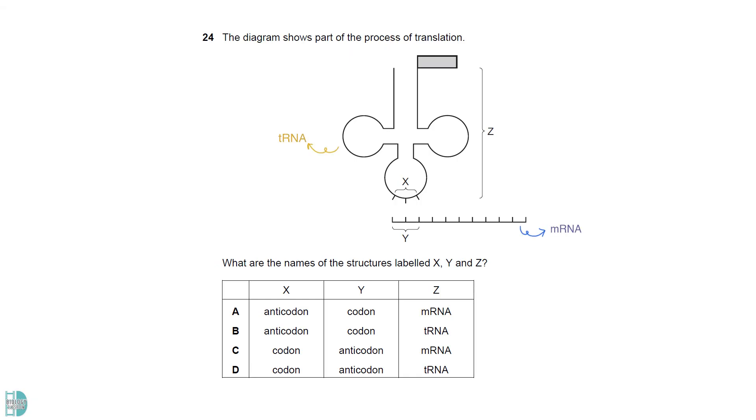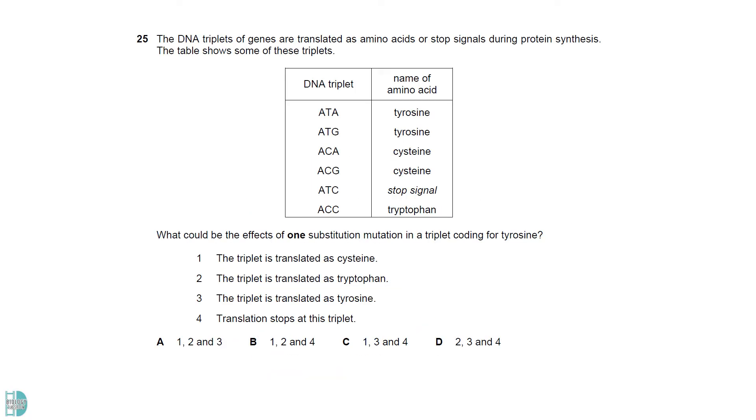This diagram shows a tRNA and an mRNA molecule. Z is the tRNA. X is the anticodon which forms a complementary base pair with the codon on mRNA. One is true. If a base substitution occurs and changes ATA to ACA or ATG to ACG it will now code for 16. Two is wrong. Neither of the codes can be altered into ACC by a single base substitution. Three is correct. If the last A in ATA is substituted by a G it will become a different triplet but still codes for tyrosine. Four is also correct. If the last base of either of the triplets is changed into a C it will become a stop triplet.